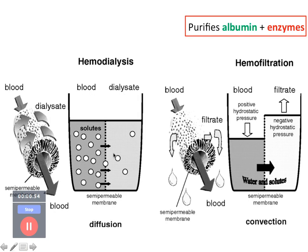When we look at dialysis, we basically pass blood through the dialysis filter and dialysate flows counter-current to the flow of blood. With diffusion, there is elimination of solutes from the blood into the dialysate. The key process in hemodialysis is diffusion, where solute moves from a high concentration gradient to a low concentration gradient — that is the principle of hemodialysis.